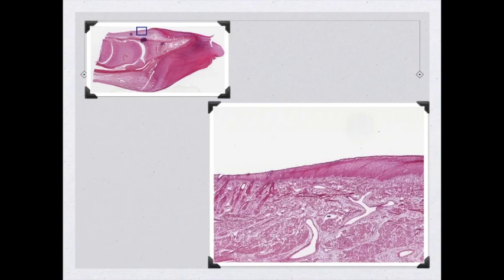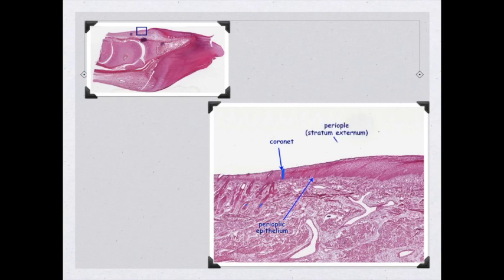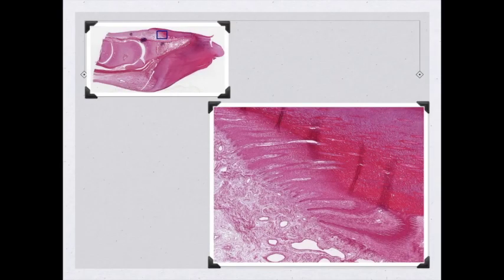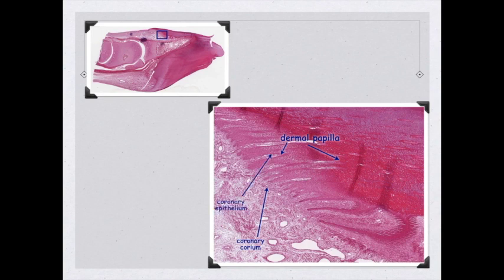Let's do a close-up at the coronet. We can see some hair follicles, and right about here is the junction between the skin and the hoof — this is our cornet. Here we have our perioplic epithelium giving rise to our stratum externum or perioplic, with perioplic corium beneath it. Along here is where we find our coronary epithelium, and we can see the coronary corium has dermal papillae that extend out, covered by the coronary epithelium.